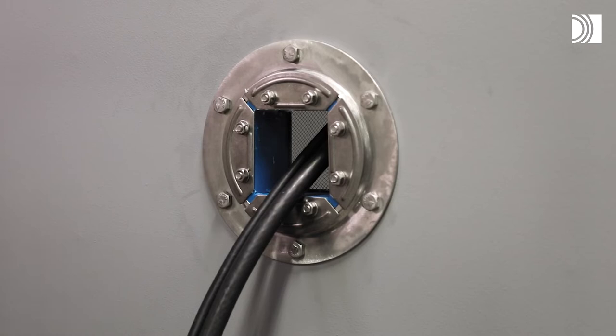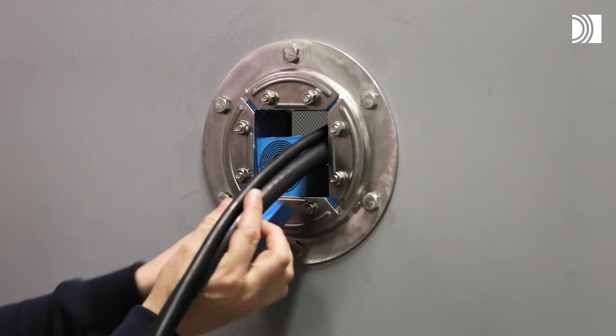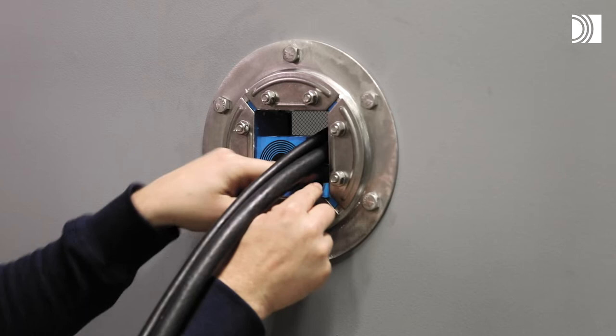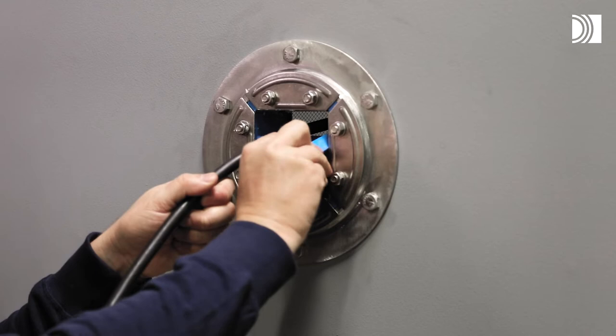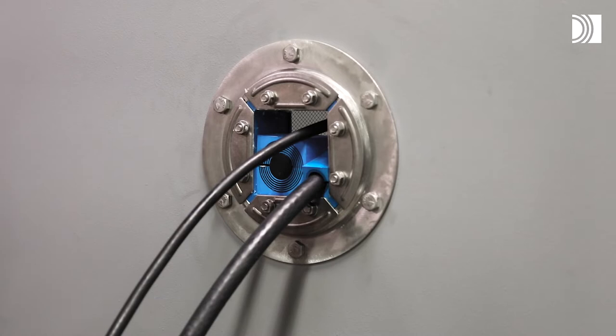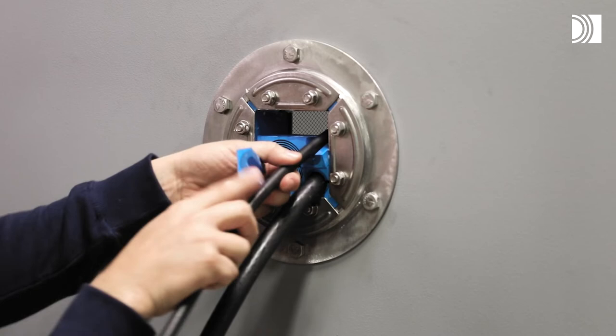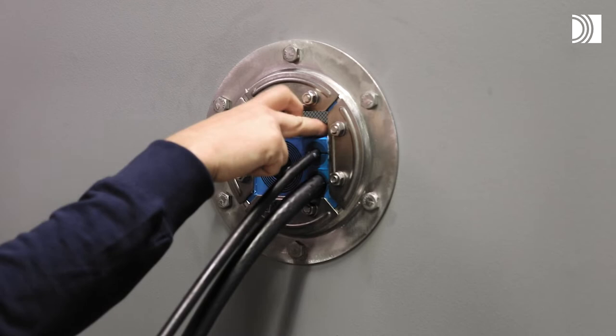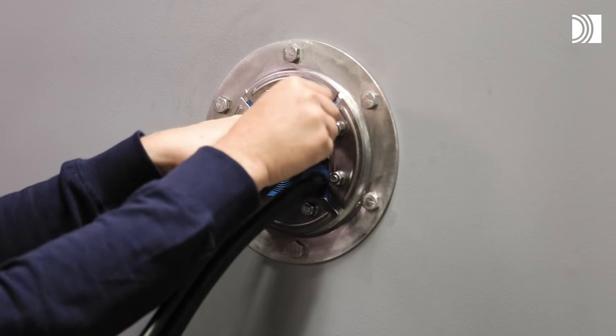Install the modules. Insert the modules and cables or pipes according to your packing plan. A Roxtec pre-compression tool can be used to make room for the final module row if necessary.